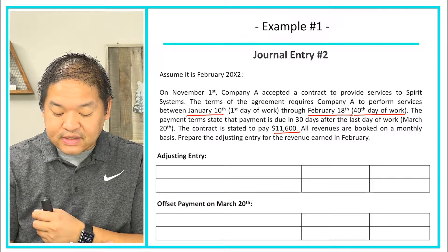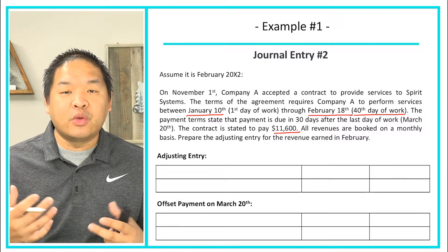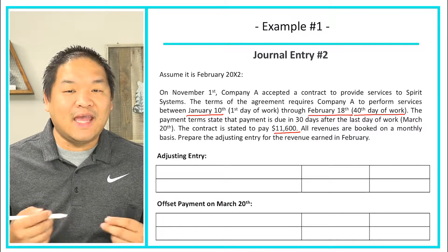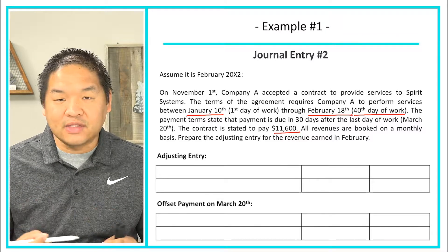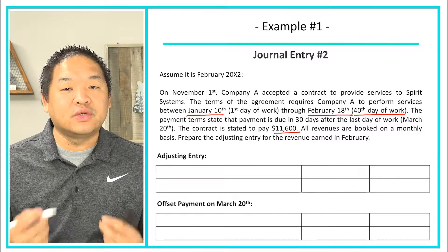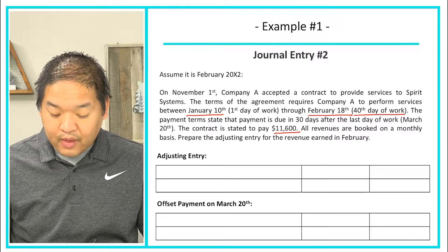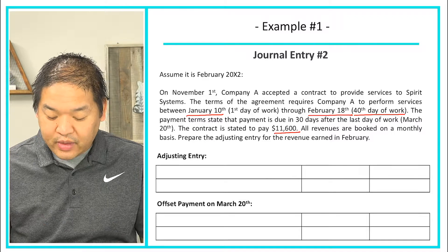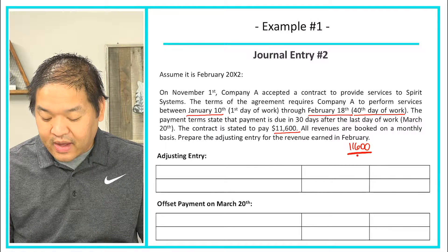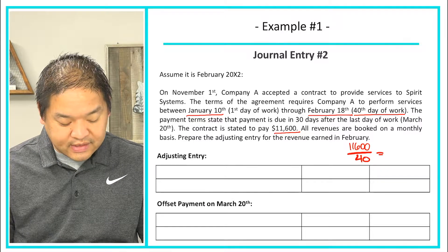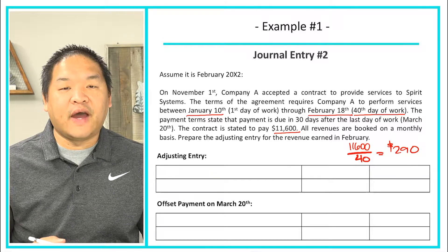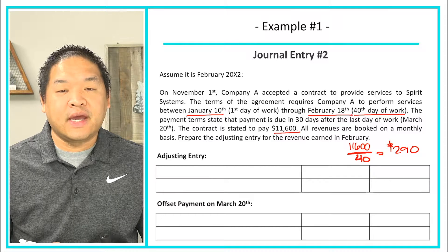We need to prepare the adjusting entry for revenues earned in February. We are at the end of February, we've earned revenue but haven't been paid yet. We've earned 18 days — February 1st through February 18th. To find the daily rate, we take $11,600 divided by 40 days, which gives us $290 per day. Every day we provide service to Spirit Systems, we earn $290.